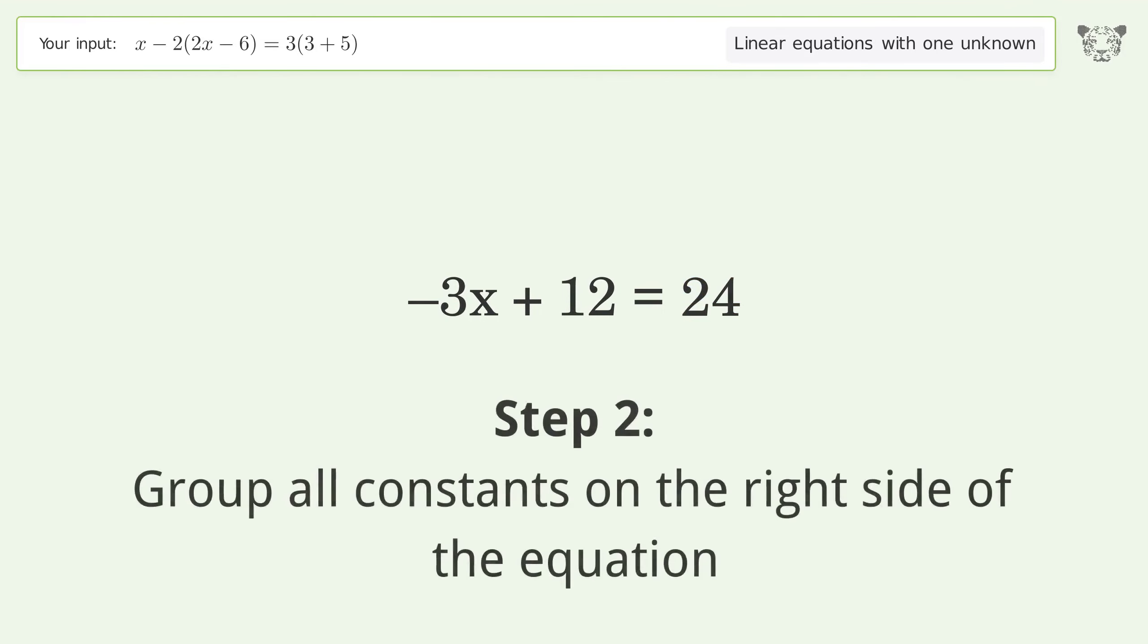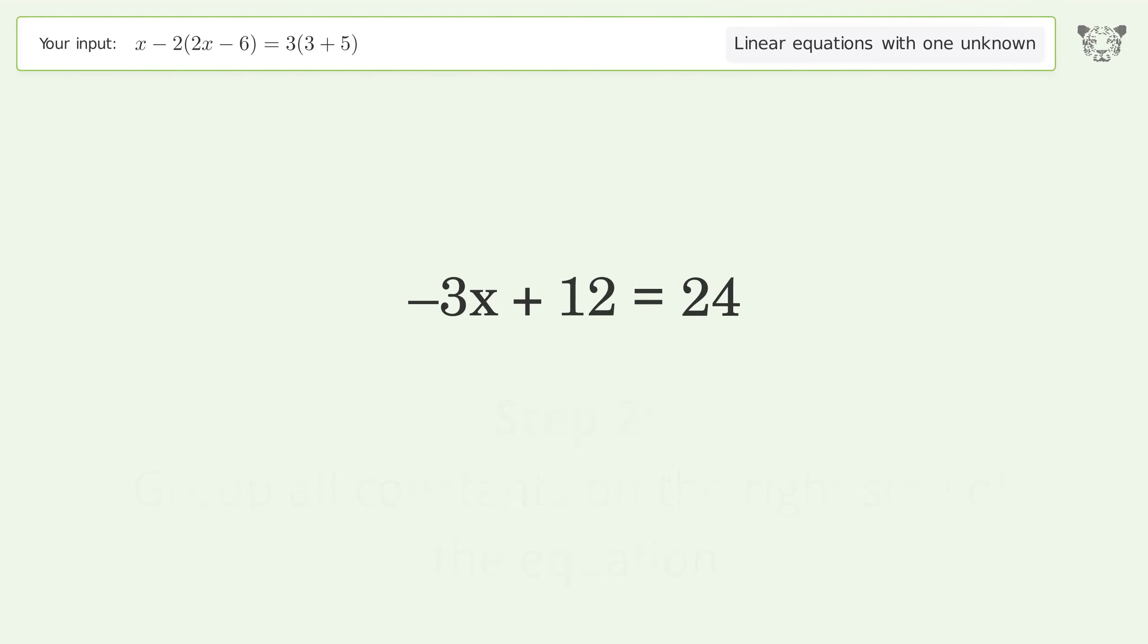Group all constants on the right side of the equation. Subtract 12 from both sides. Simplify the arithmetic.